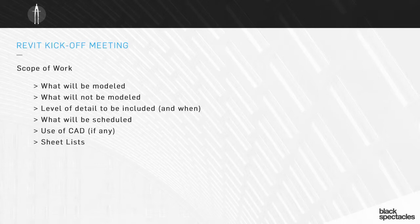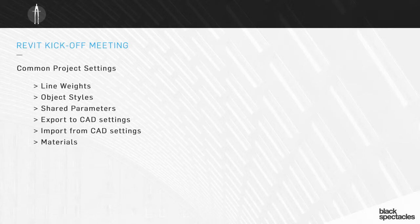Also in terms of scope of work, you need to understand if there is CAD being used on this project, what it's being used for and in what circumstances. And you need to know what the sheet list for the project is — what sheets are going to be produced, how many floor plans, what elevations, what wall sections. You should have a mock-up of what the set is going to be, and that typically comes out of the kickoff meeting discussion.